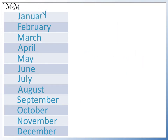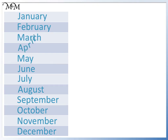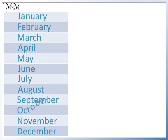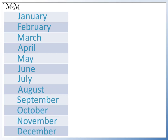January, February, March, April, May, June, July, August, September, October, November and December.